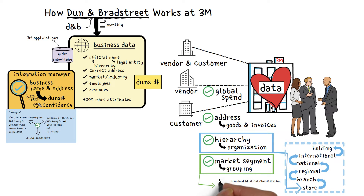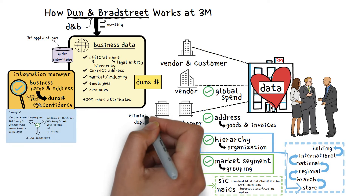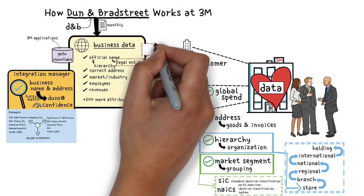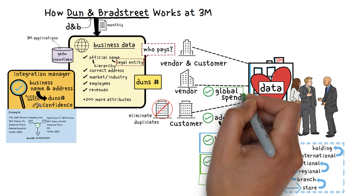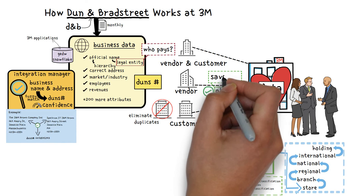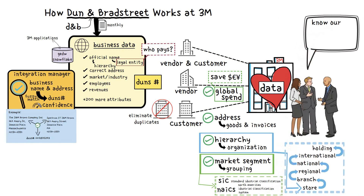Standard industrial classification codes, referred to as SIC codes, and the North American Industrial Classification System, known as NAICS, are used to group customers. The DNB data will also help identify duplicate customers that might exist within 3M's master data. It will determine legal structures to manage things like who is ultimately responsible for paying a 3M invoice that might be past its due date. And this data allows sourcing to leverage aggregate spend from multiple 3M vendor IDs with the same parent company during contract negotiations. But ultimately, it's an opportunity for 3M to know our customers and engage with our vendors more intimately.